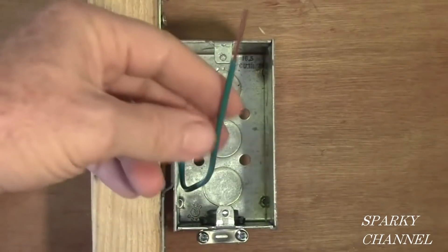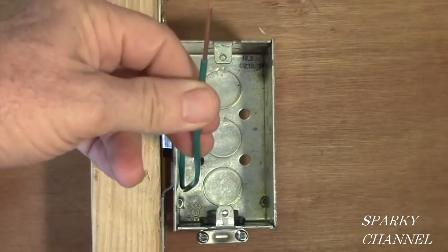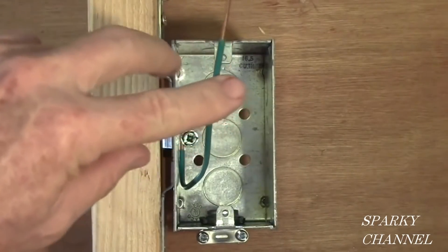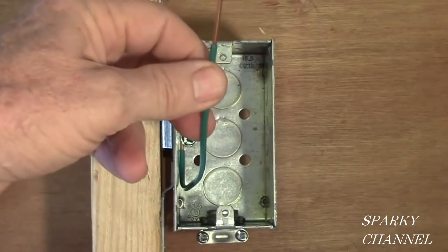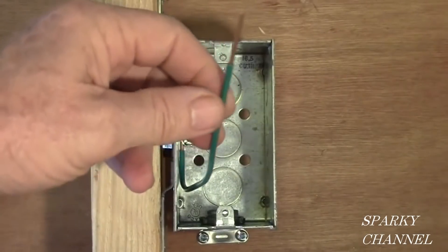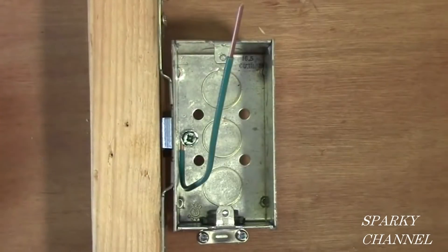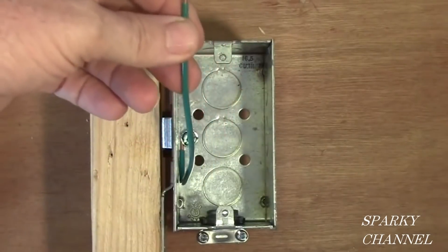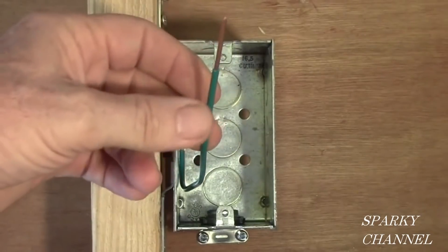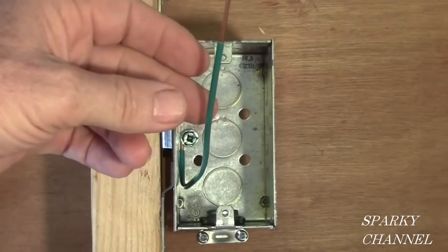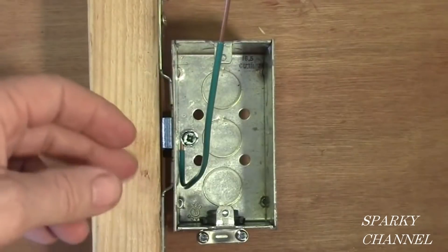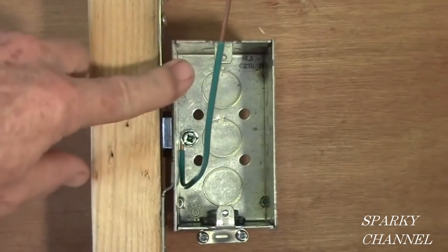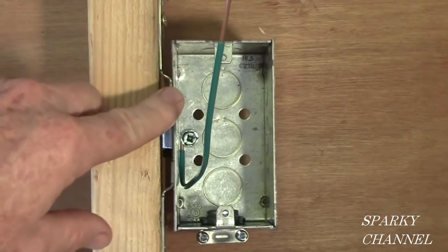And this is an equipment bonding jumper. That's what it's called in the code book. If you go to buy one, it's called a grounding pigtail. But in the code book, it's called an equipment bonding jumper, and it's actually a more accurate name because it does bond your equipment to the grounding system.